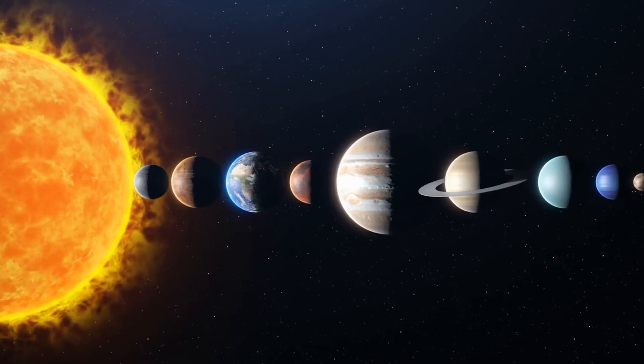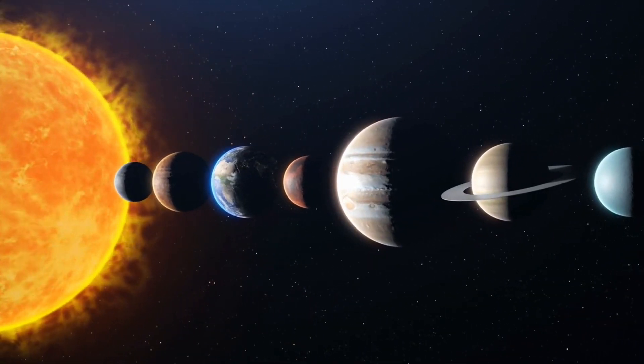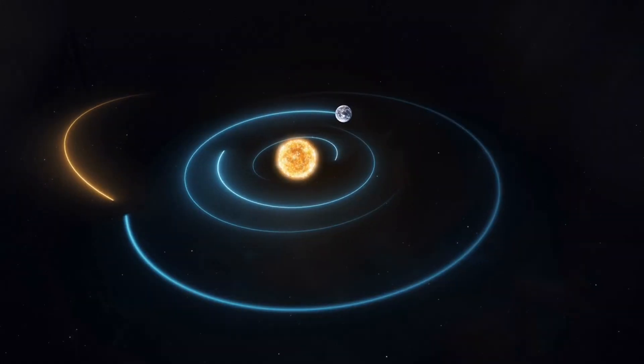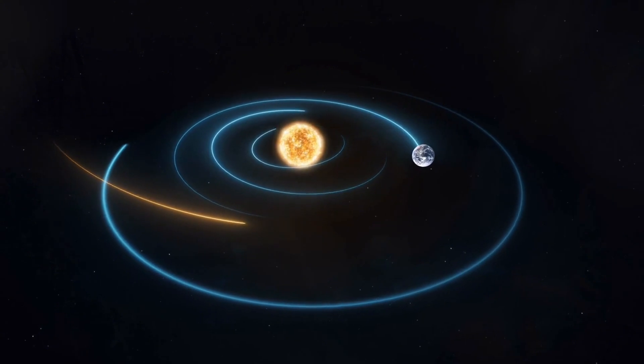It pulls the strings, choreographing everything from the enchanting polar lights on Earth to the whimsical weather patterns on distant planets. To fathom the sun is to crack the code of the fundamental processes that rule our cosmic corner.